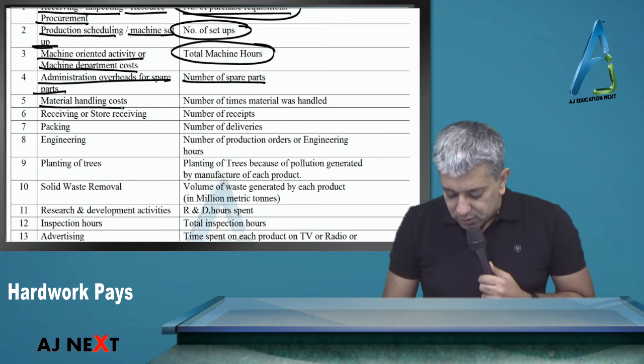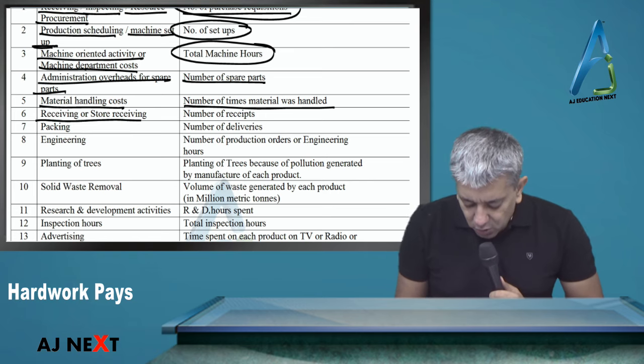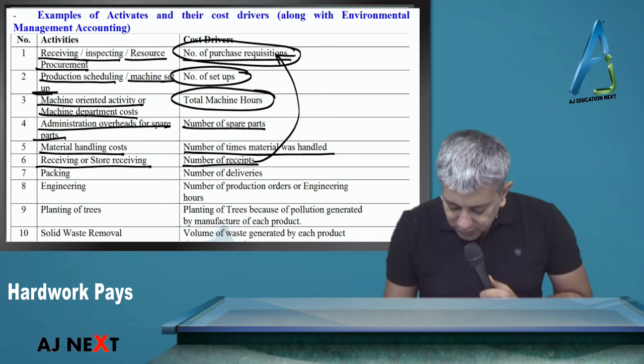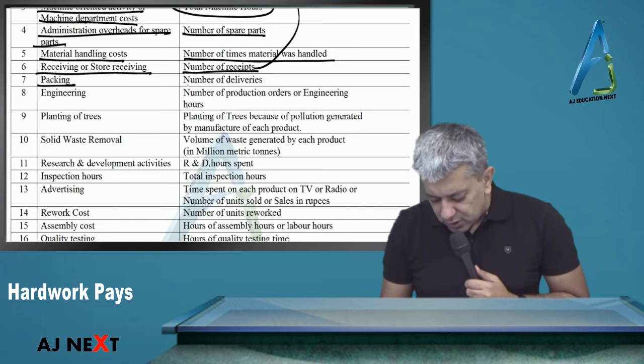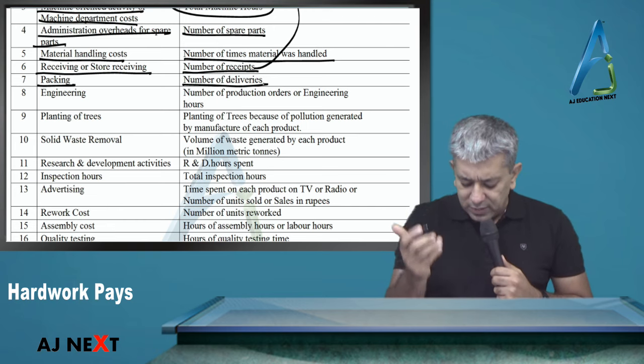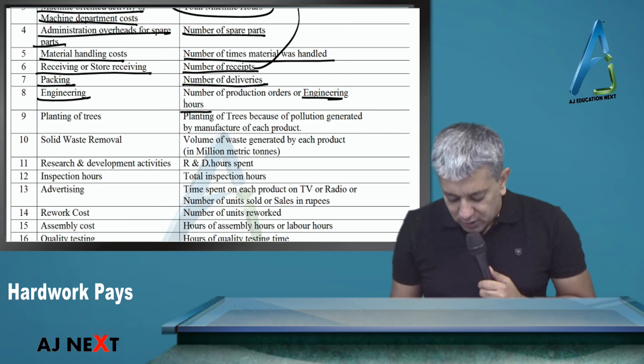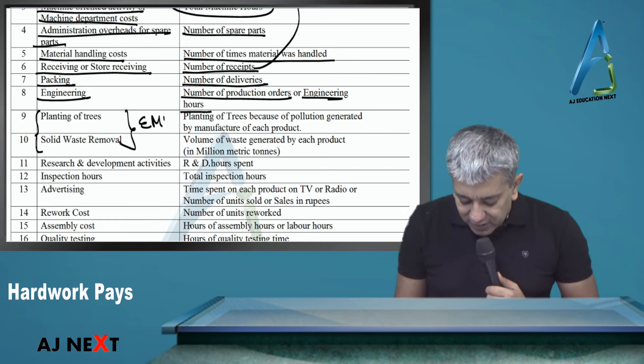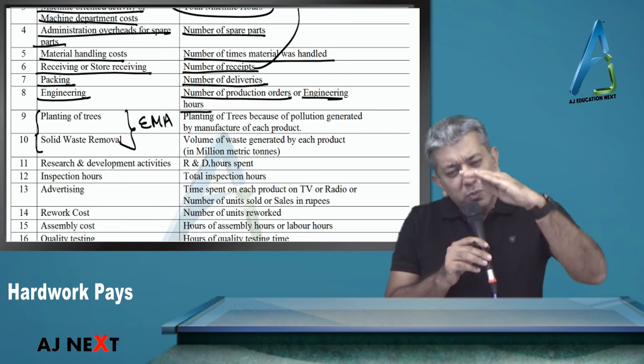Machine-oriented activity and machine department cost, please divide in the ratio of total machine hours. Total machine hours means machine hours per unit times number of units. Administration overheads for spare parts, divide in the ratio of number of spare parts. Material handling cost, divide in the ratio of number of times material was handled. Receiving or stores receiving cost, number of receipts - this is almost the same as purchase orders because as many times as you place orders, that many times raw material will come.